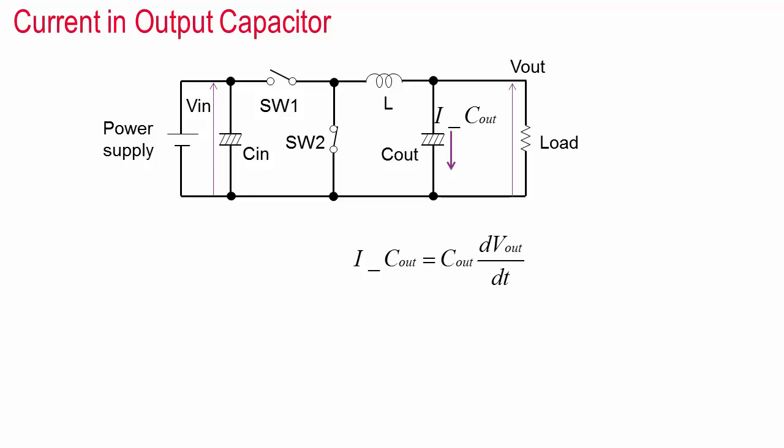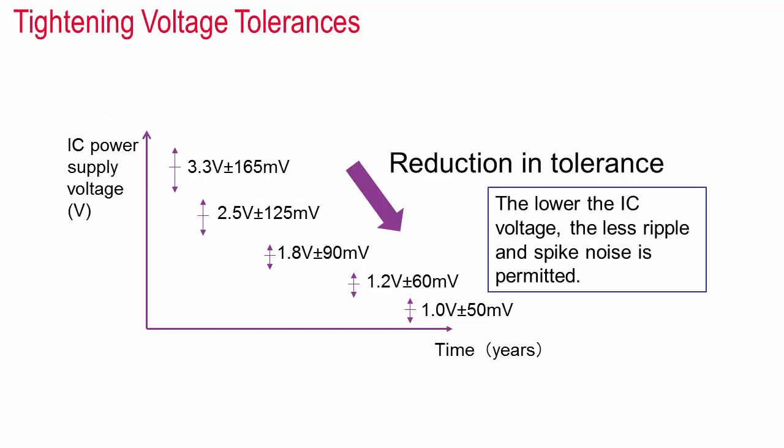The capacitance and inductance values also determine the transient behavior, how rapidly the converter can respond to changes in the load. You can simulate these converters using ideal switches initially, then replace them with FETs. Okay, I've talked about basic DC to DC converter operation. Why is it important to minimize ripple and voltage spikes?